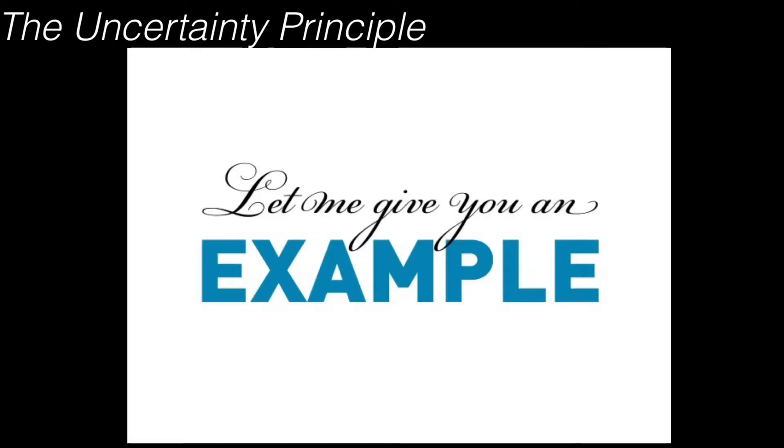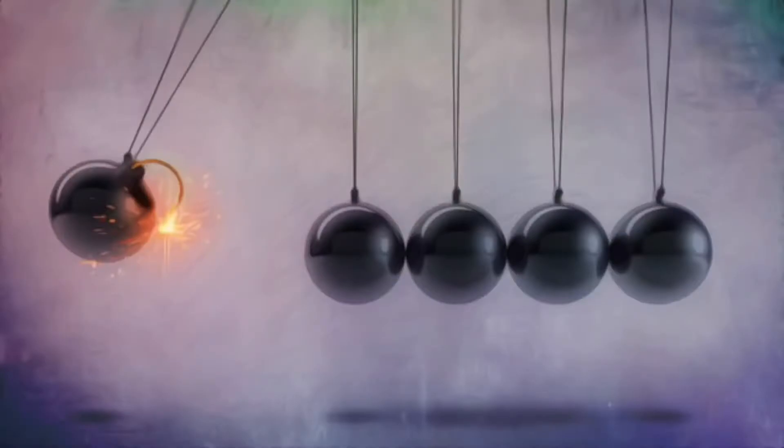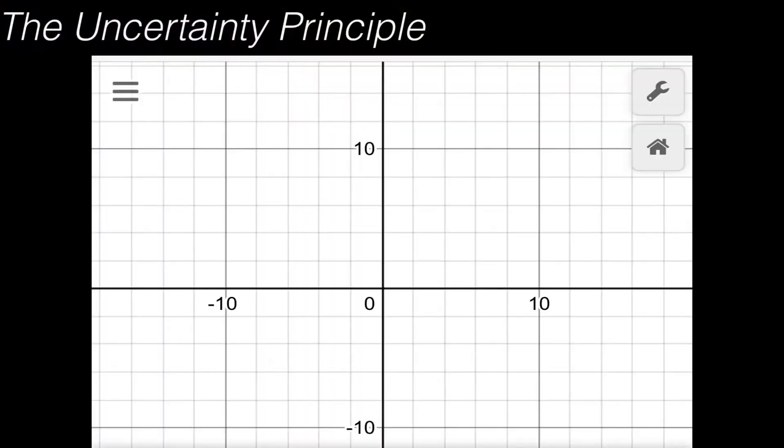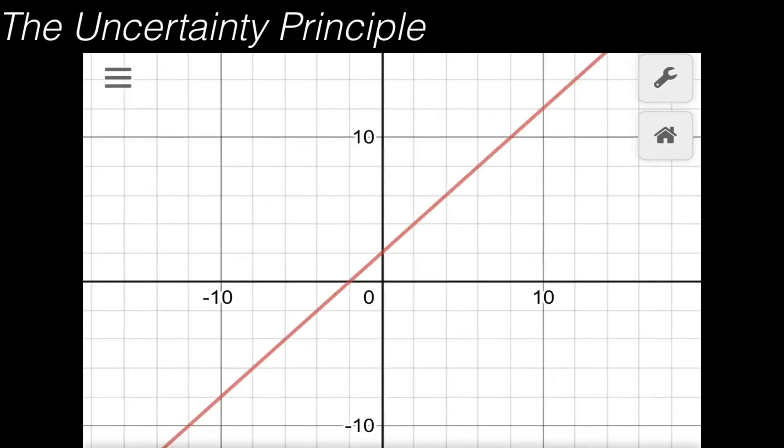To start with the uncertainty principle, I'll give you an example to understand the differences. In classical physics, we have a grid full of x and y-axis, then we draw a line between. If we know the slope and also a point on the coordinates on the line that we drew, we can calculate any point of the line.